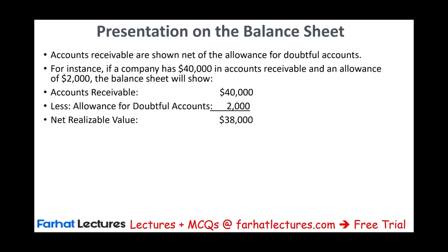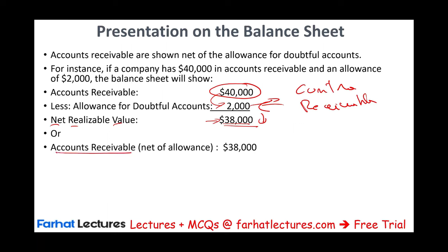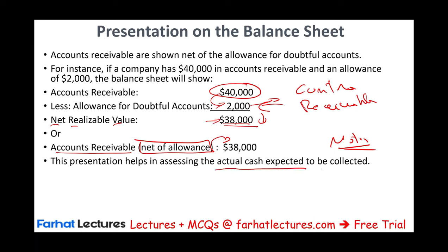This method gives you the net realizable value. Let's assume a company has $40,000 in accounts receivable and $2,000 in the allowance. Since allowance is a contra receivable, they present this as $40,000 minus $2,000 equals $38,000. That $38,000 is the proper amount — it's the amount expected to be collected. Some companies present this as one line: accounts receivable, net of allowance, $38,000. In the notes to the financial statements, they provide more details. This presentation helps users assess the actual cash expected to be collected.